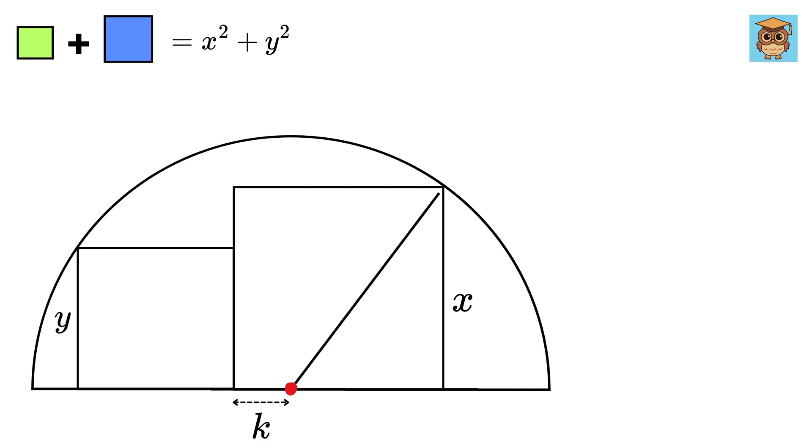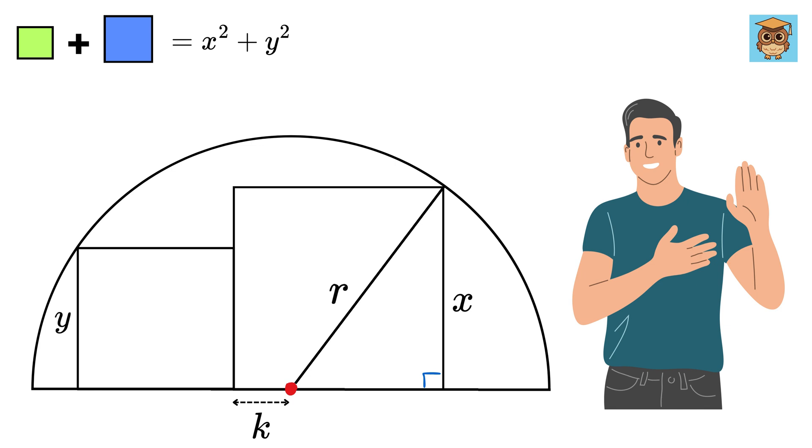Now, draw this line such that this is a right-angled triangle. What will be this length? It will be the same as the radius of this semicircle, right? Let us call it R. I promise, this is the last variable we are using.